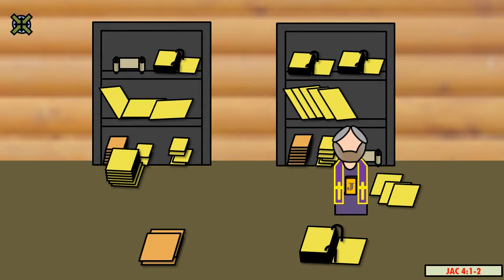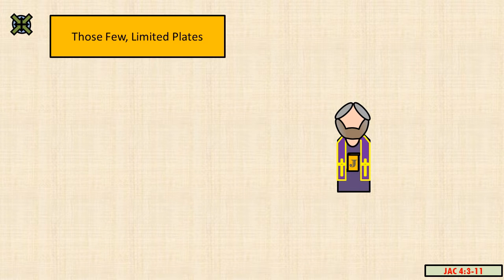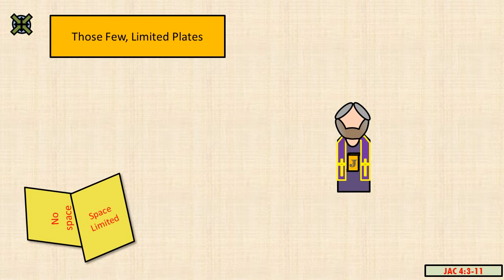But we can write a few words upon plates which will give our children and also our beloved brethren a small degree of knowledge concerning us or concerning their fathers. Now in this thing we do rejoice, and we labor diligently to engrave in these words upon plates, hoping that our beloved brethren and our children will receive them with thankful hearts and look upon them that they may learn with joy and not with sorrow, neither with contempt concerning their first parents. He's going on and on about how they need these plates and they don't have a lot of space, but he has not hesitated to ramble on about it.